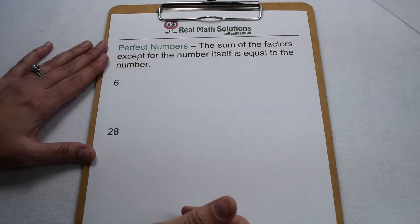Numbers can be classified as abundant, deficient, or perfect based on the sum of all the factors except for the number itself.